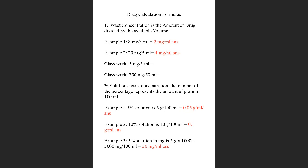Example two: if you have a solution with 20 milligrams in five mils and we need to find the exact concentration, it's 20 milligrams divided by five mils. 20 divided by five is four, and you put back your measurements — so it's four milligrams per mil, because none of the measurements cancel out.